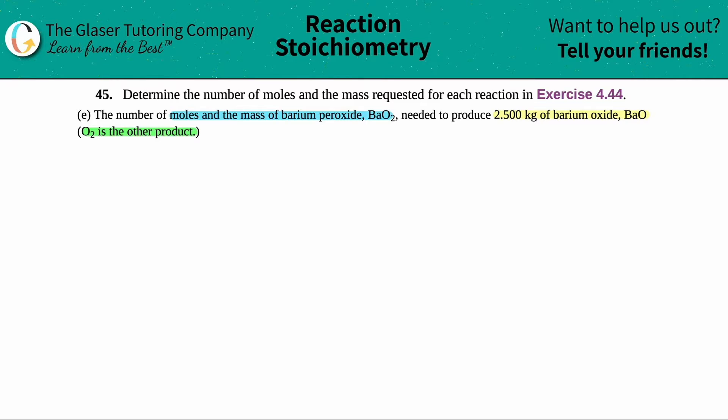So in this case we want to find the moles and the mass of BaO2 which is needed to produce barium oxide and the other product is O2. So it seems that the BaO2, the barium peroxide, is going to produce, which means yield, the first product which is barium oxide, and then the other product which is O2. Now just writing out the equation like this isn't good enough. We just have to make sure that it's balanced.